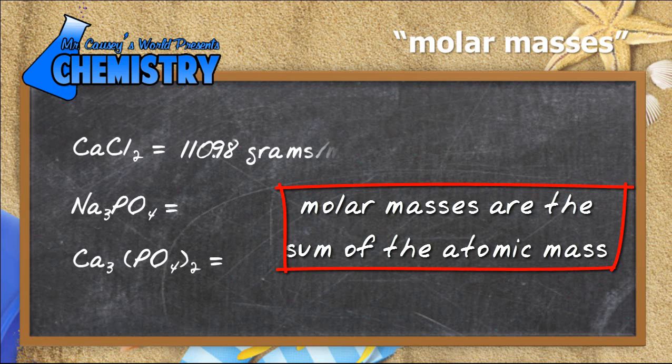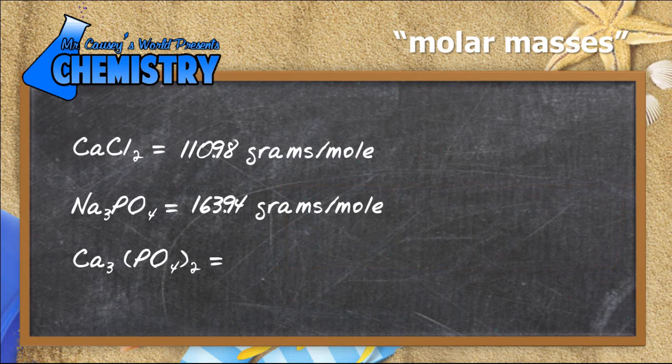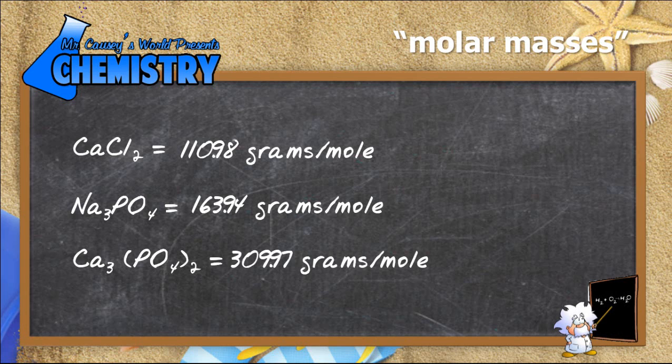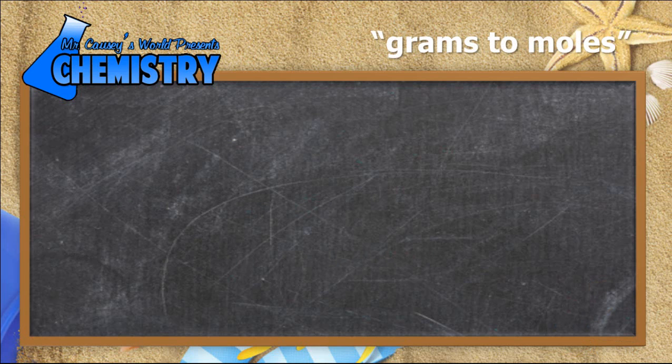Calcium chloride is 110.98 grams per mole, sodium phosphate is 163.94 grams per mole, and calcium phosphate is 309.97 grams per mole. You need to use your calculator and the periodic table to add those all up. There's also a video on how to do these if you're not sure.